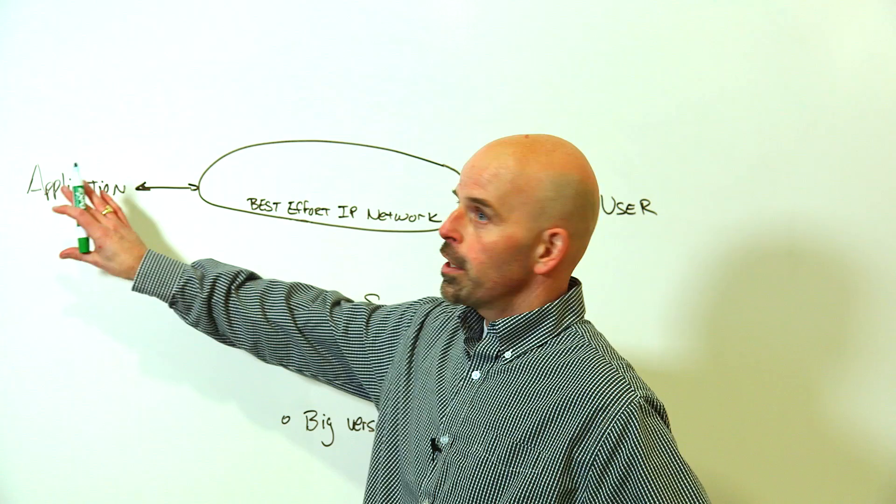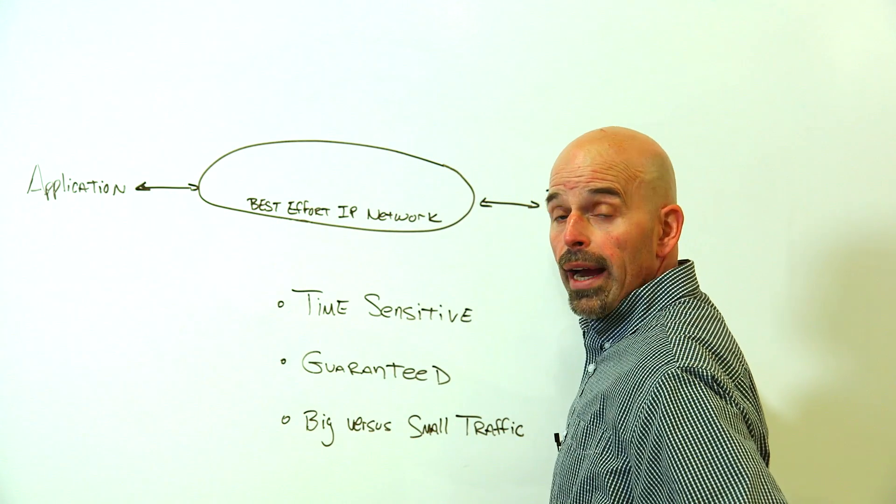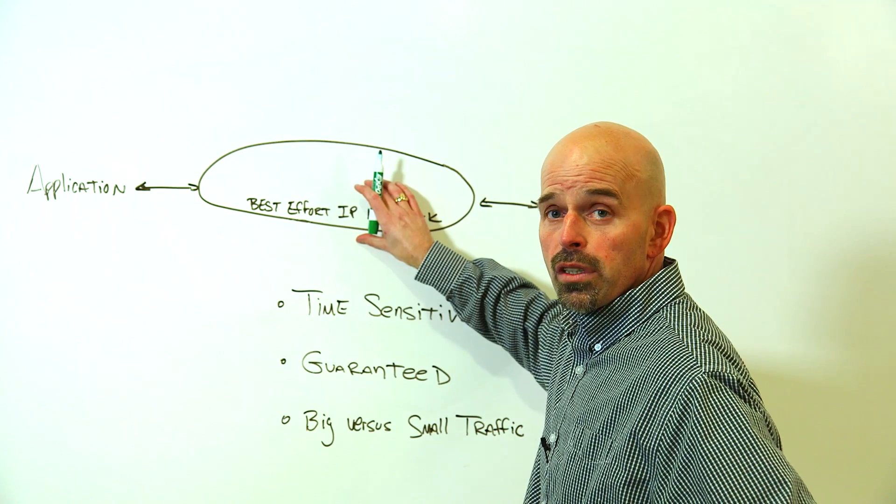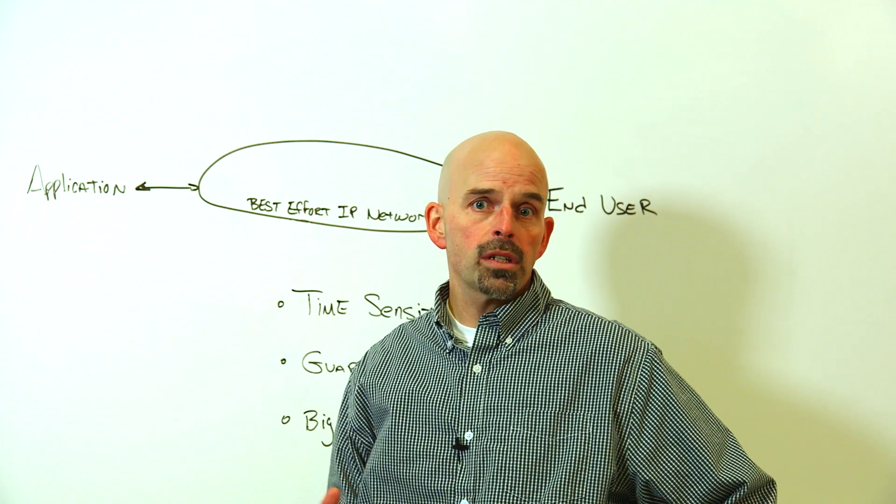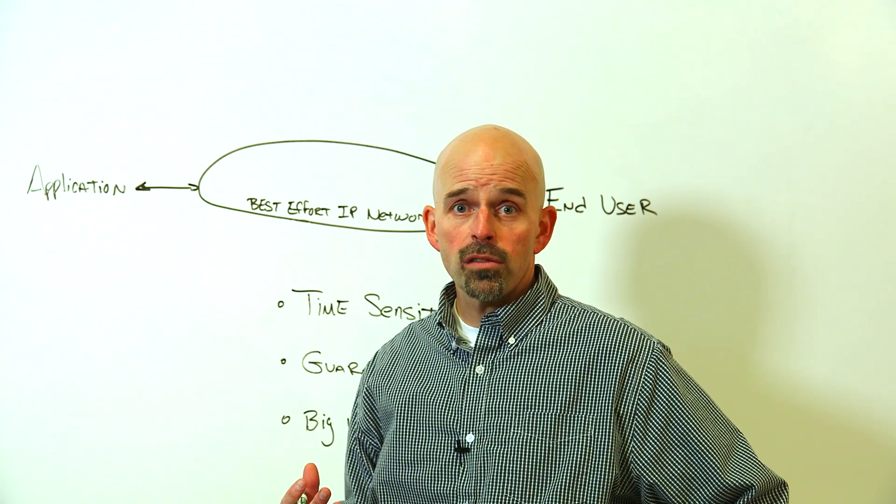In networks today, you have applications on the left side of the pane delivering their services to the right side of the pane, their end user, over an IP network that has a best effort delivery mechanism. They ride on top of an IP transport without consulting with that transport or having any control over that transport. It's a best effort service delivery.